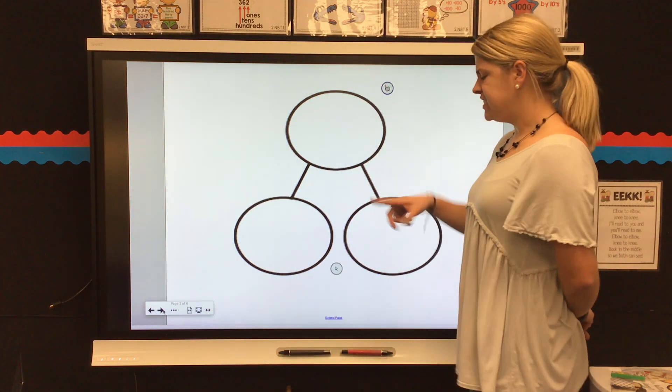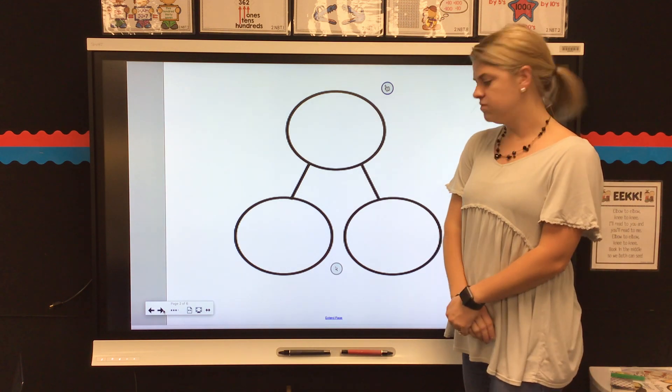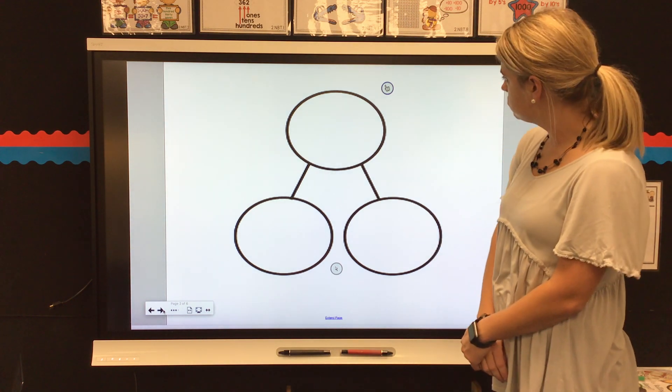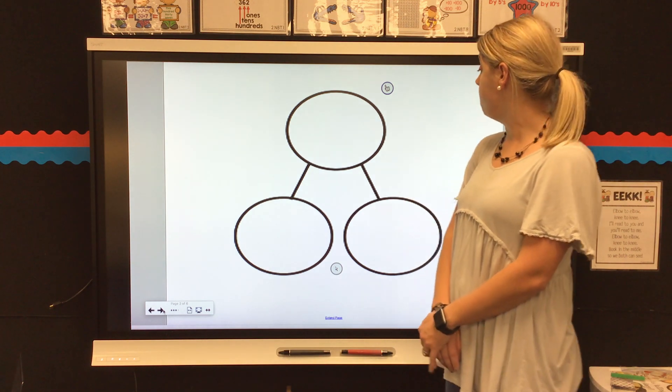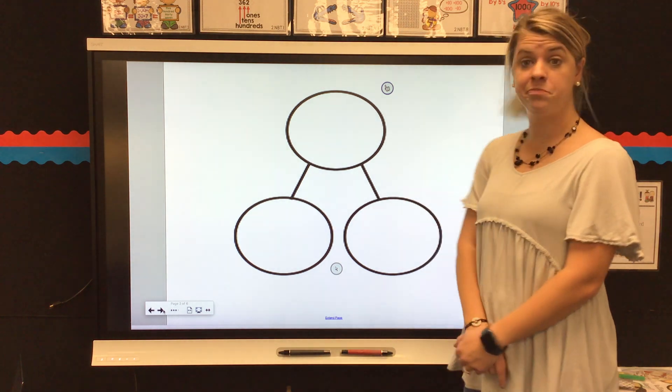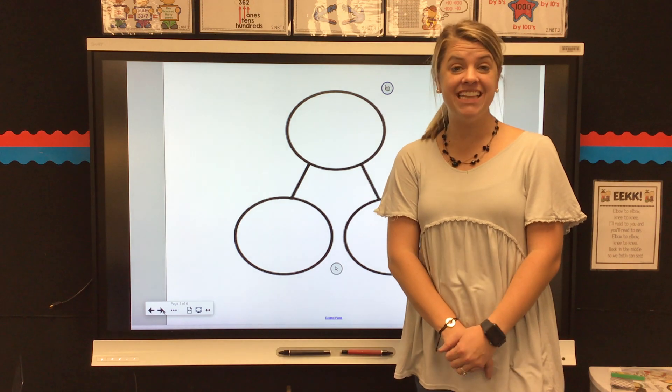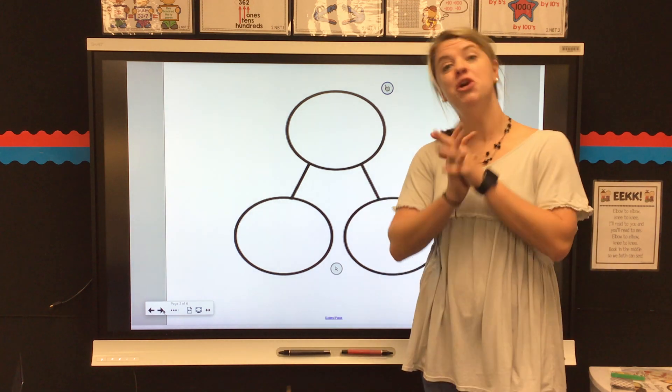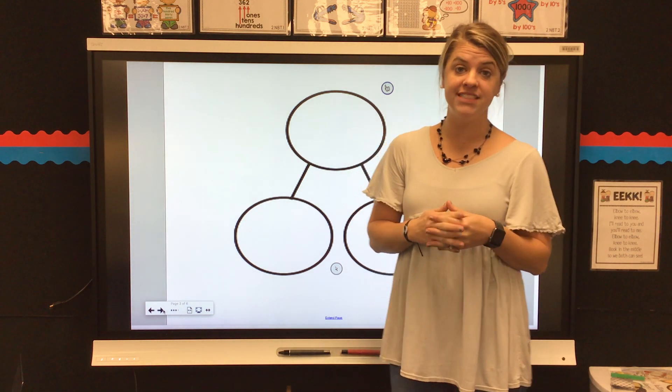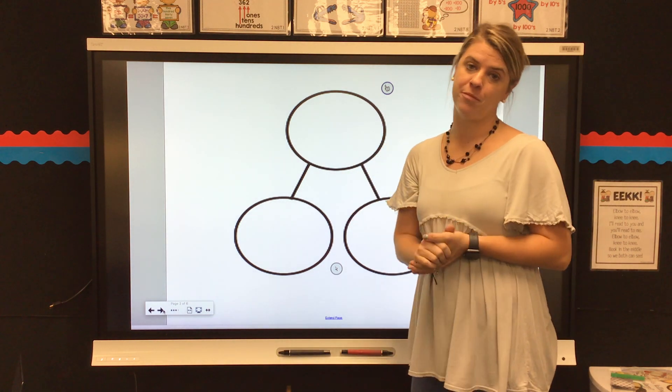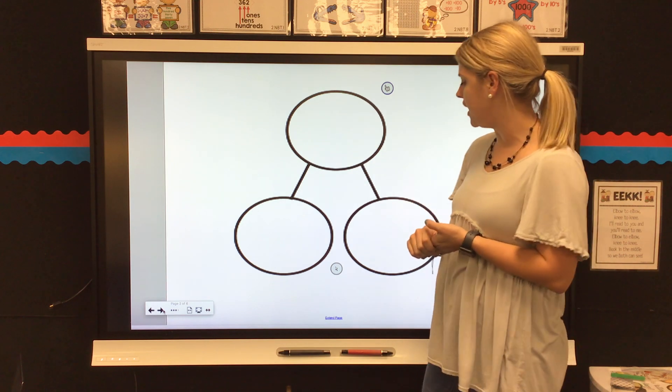Now, does anybody know what this is? What is this called? If you said that this is a number bond, you are correct. So today we're going to be using something called the number bond to help us decompose our number into tens and ones.